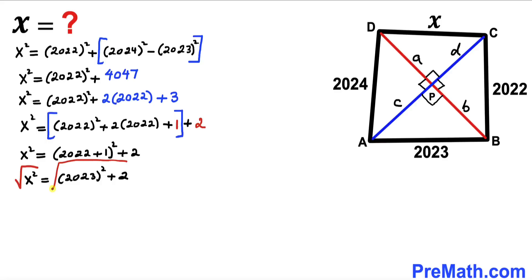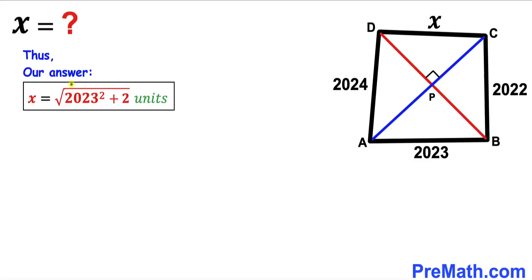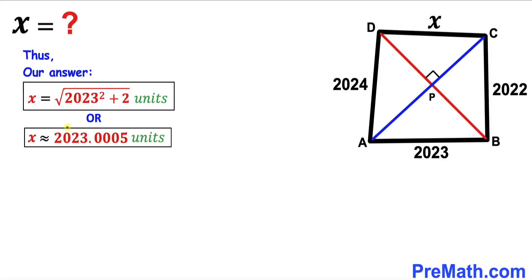Taking the square root of both sides, x = √(2023² + 2) units, which is approximately 2023.0005 units. Thanks for watching and please don't forget to subscribe to my channel for more exciting videos!